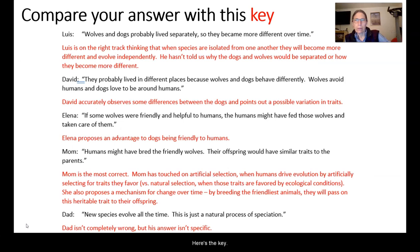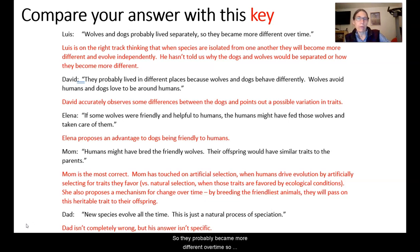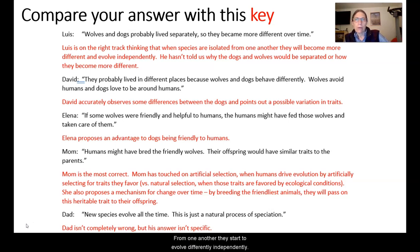Okay, here is the key. Looking at Louise: she said they lived separately, so they probably became more different over time. This is on the right track — if species get isolated from one another, they start to evolve differently and independently. But she hasn't told us why the dogs and wolves would be separated or how they became different.